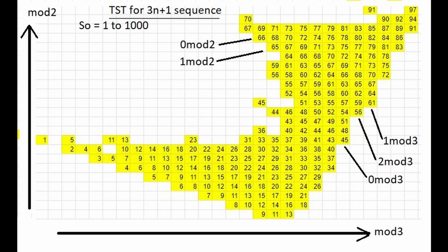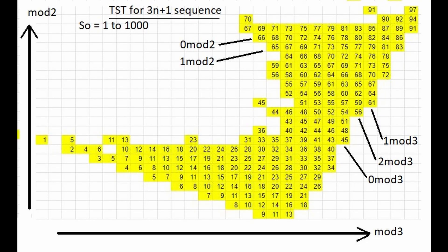The values of TST in the downward-sloping line are separated by 3s, or have the same residual mod 3 number. The upward-sloping line has values separated by 2s, or the same residual mod 2 number. If we make the downward-sloping line orthogonal to the upward-sloping line, we get the TST values for S0 from 1 to 1,000 on a 28 by 28 grid, showing the 0 mod 2 and 1 mod 2 horizontal lines and the 1 mod 3, 2 mod 3, 0 mod 3 vertical lines.